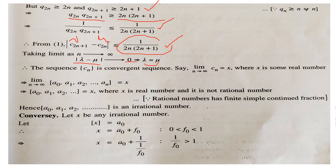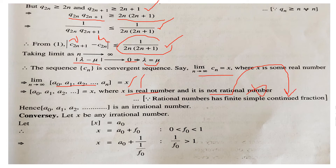So the sequences of odd and even convergents both approach the same limit x as n → ∞. Now x is a real number. It cannot be a rational number, because rational numbers correspond to finite simple continued fractions. Since real numbers consist of rationals and irrationals, and x cannot be rational, x must be an irrational number. The first part of the proof is complete.